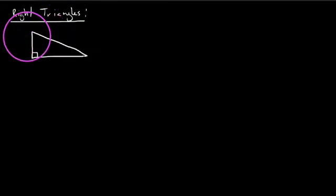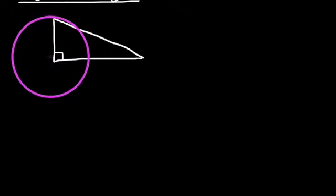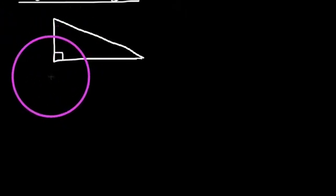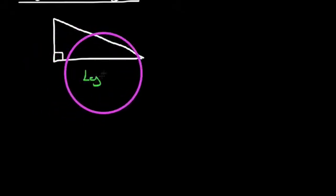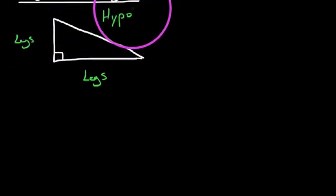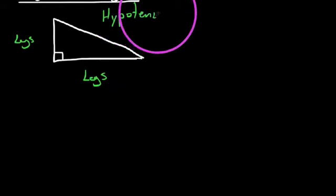In this video, we're going to be discussing the basics of right triangles, starting with the fact that every right triangle has a 90-degree angle. So this would be an example of a right triangle over here. We refer to the two non-longest sides as the legs, and we refer to the longest side as the hypotenuse.